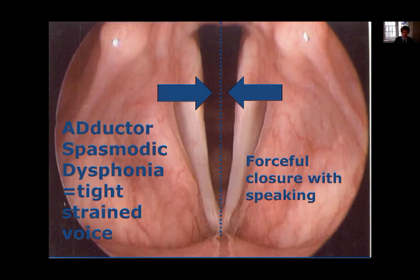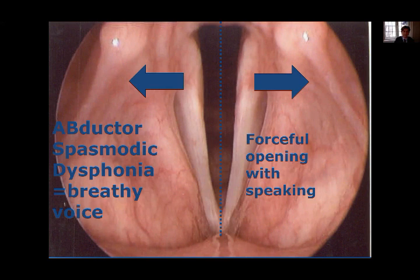With abductor spasmodic dysphonia, the voice is breathy. The muscles that open the vocal cords for breathing are inappropriately contracting hard and pulling the vocal cords open when they should be closer together for a good, clear-sounding voice. Abductor SD is a more rare type where the vocal cords are being pulled apart.